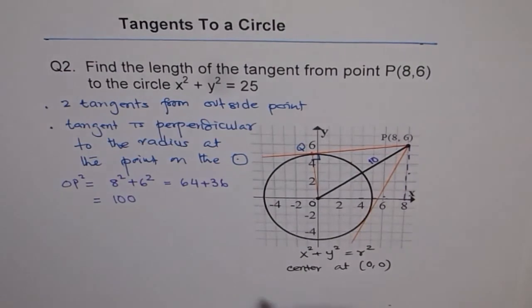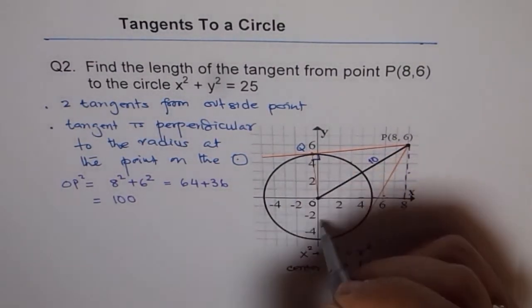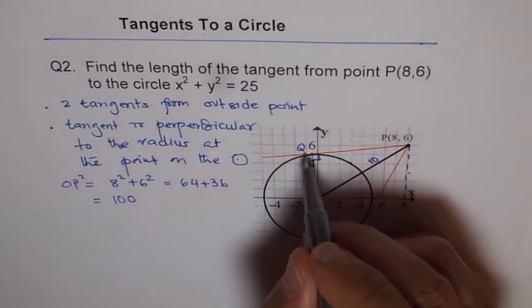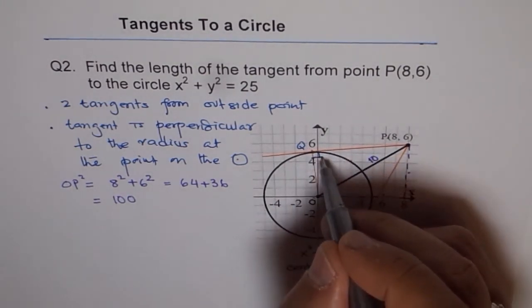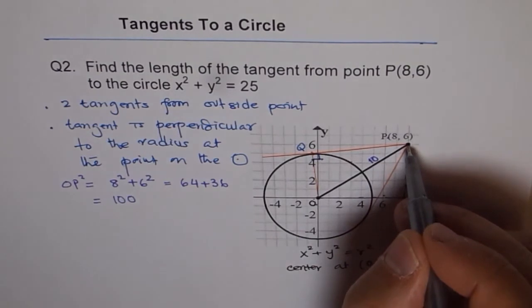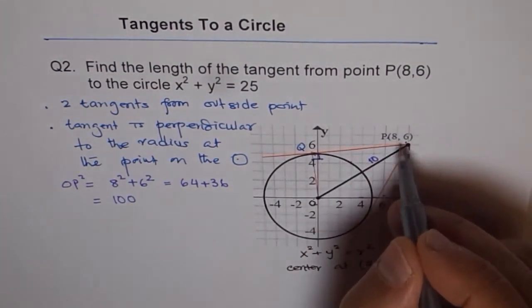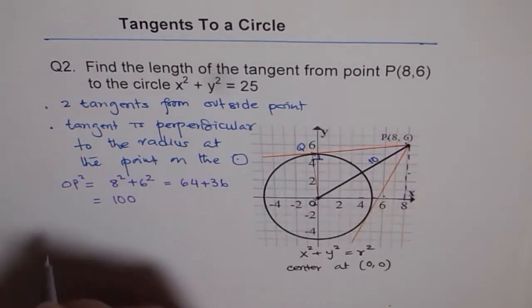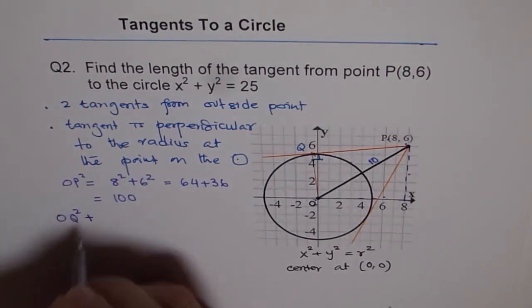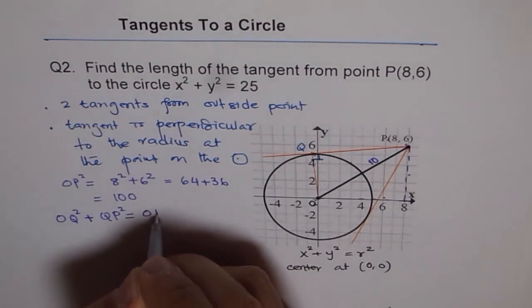So OP is 10 for us. Now, we know two sides of the triangle OPQ and it is a right triangle. Therefore, from here we can find what QP is. In this triangle, angle Q is 90 degrees, OP is the hypotenuse. Therefore, OQ² + QP² = OP².